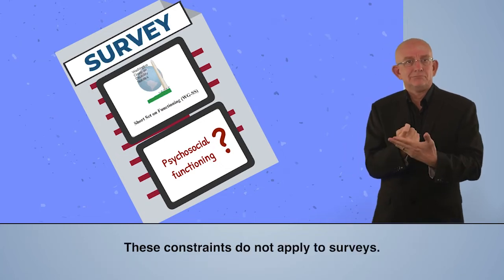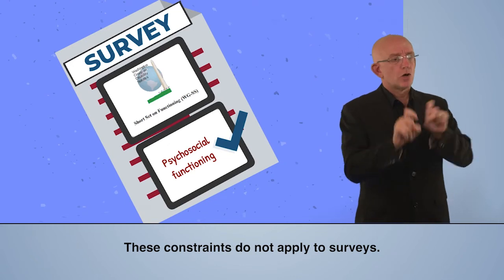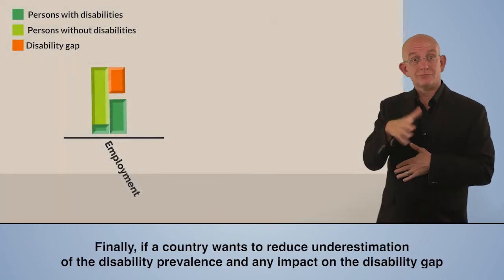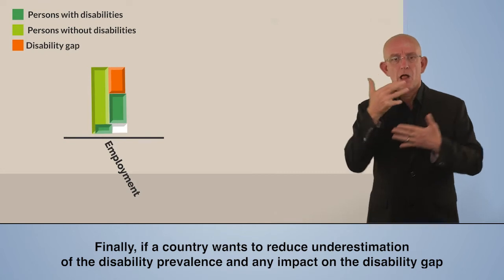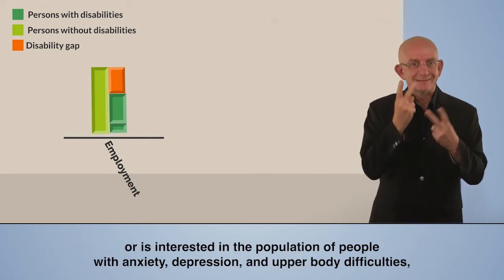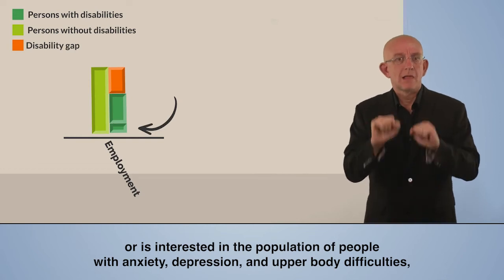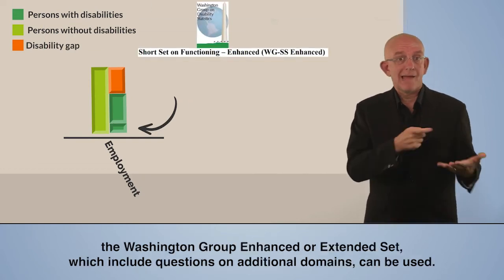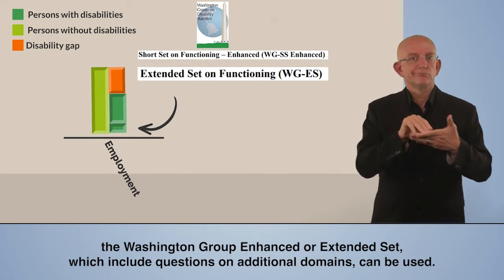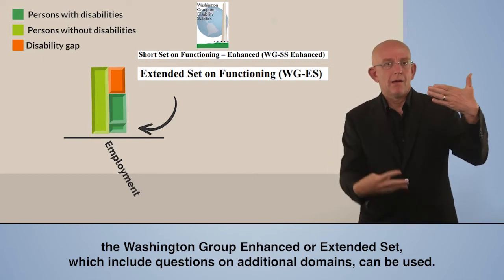These constraints do not apply to surveys. Finally, if a country wants to reduce underestimation of the disability prevalence and any impact on the disability gap, or is interested in the population of people with anxiety, depression, and upper body difficulties, the Washington Group Enhanced or Extended set, which includes questions on additional domains, can be used.